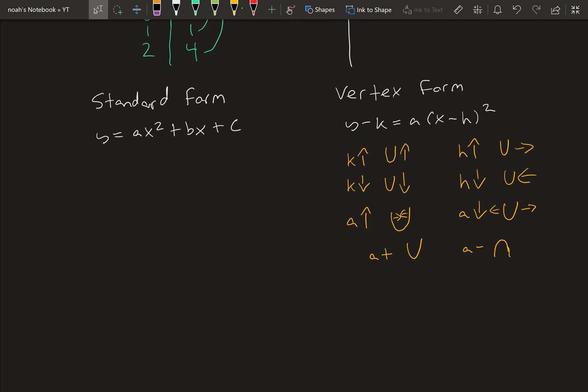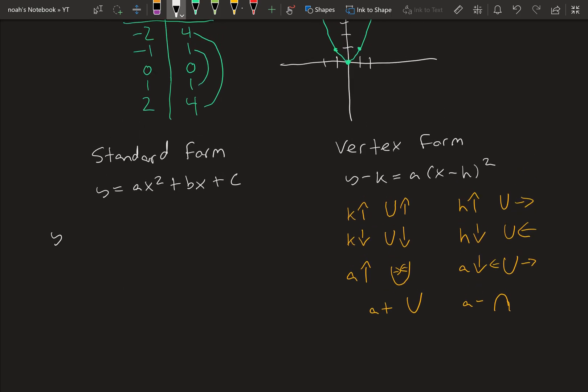To convert between forms, let's have an example. So you have y plus 1 equal to 2 times x minus 1 squared. To convert this to standard form, we would use FOIL. So first, outer, inner, last.